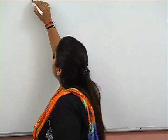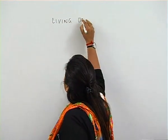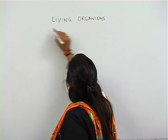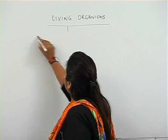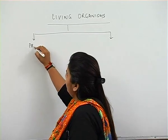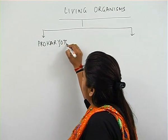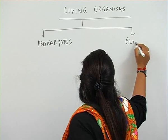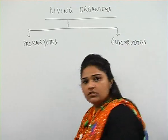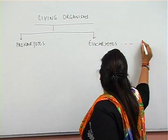Classification of living organisms. All living organisms are classified into two groups: prokaryotes and eukaryotes. This is the first grouping, the first classification — step 1.